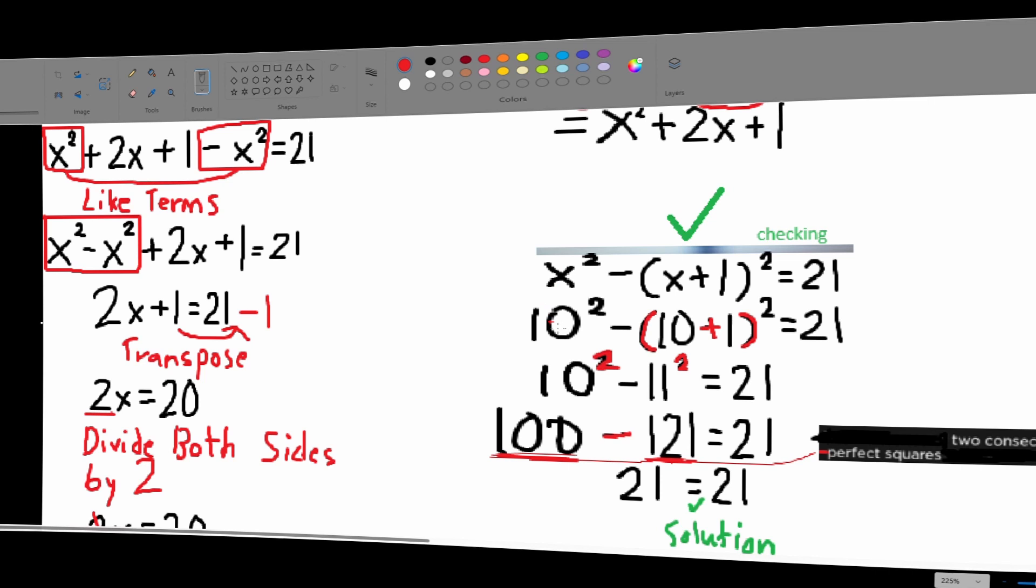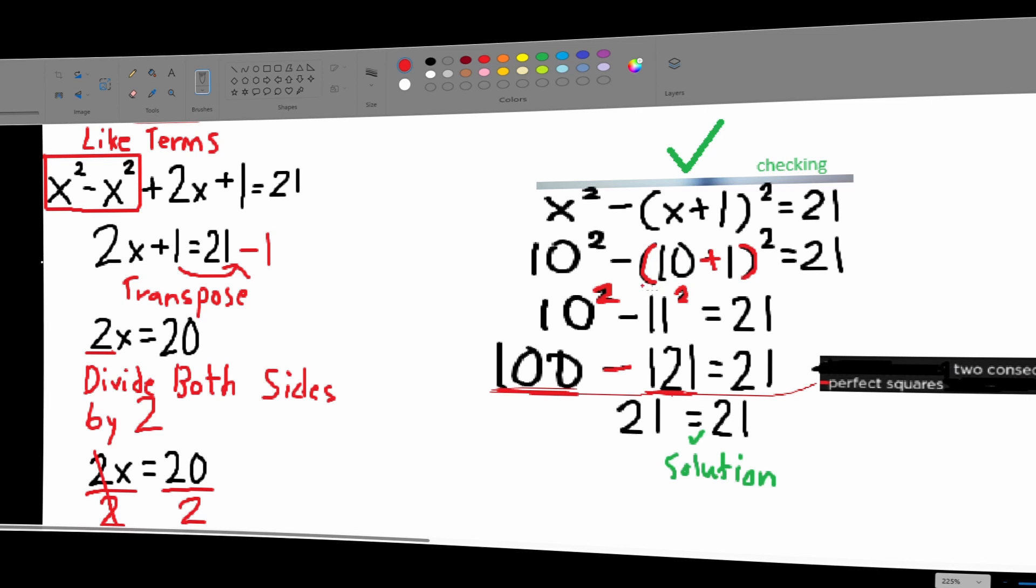Alright. So, when you put 10, 10 squared minus 10 plus 1 squared. 10 squared minus the square of 10 plus 1 equals 21. Alright. So, let's just add these parentheses first. Just remove these parentheses and then add these numbers. So, now we're left with 10 squared minus 11 squared equals 21.